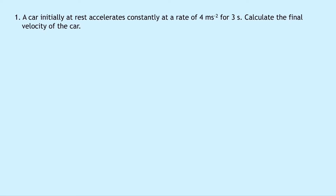So let's get going. Question one says that a car initially at rest accelerates constantly at a rate of four meters per second squared for three seconds. Calculate the final velocity of the car. So remember the method for these questions — we're going to write down SUVAT on the left hand side and pick out from the question what we know. So we've got S equals question mark.